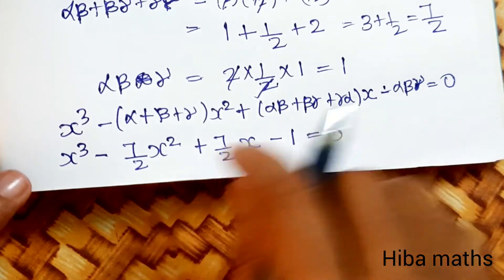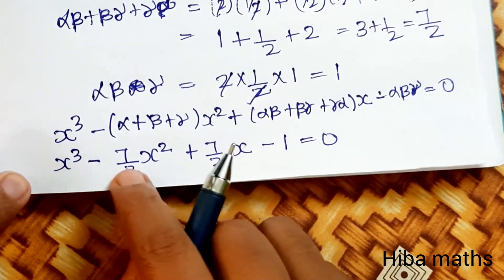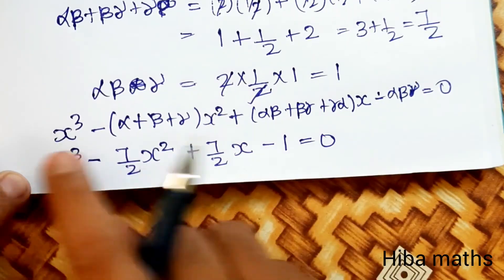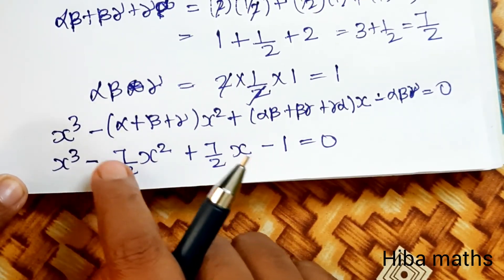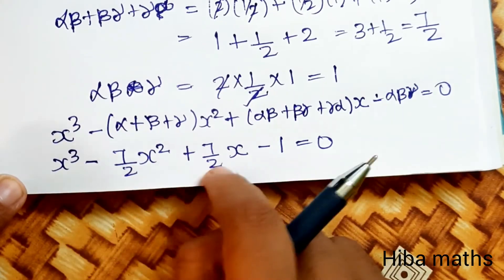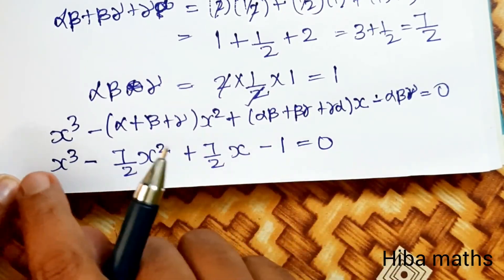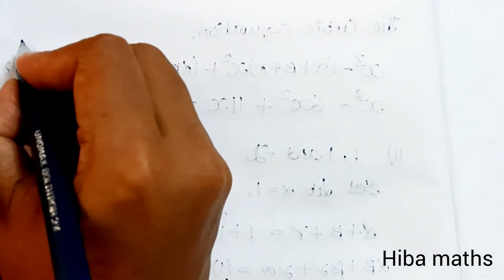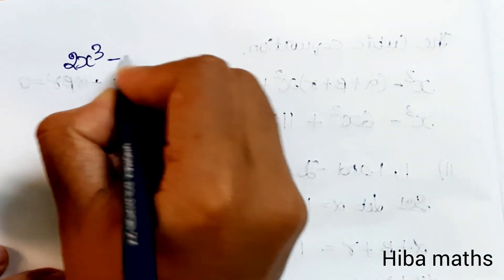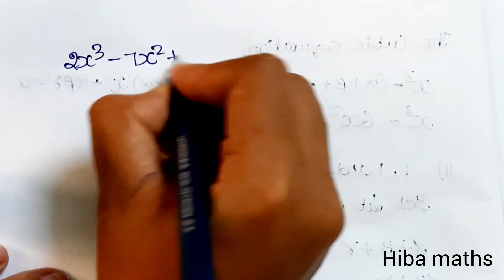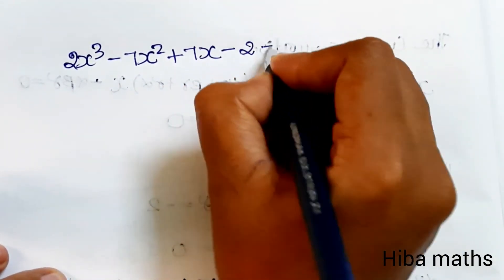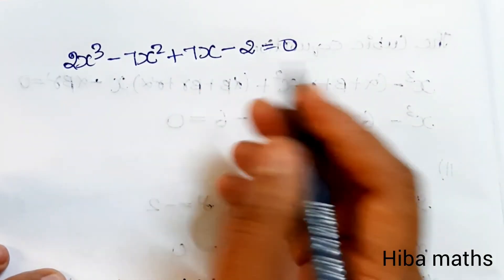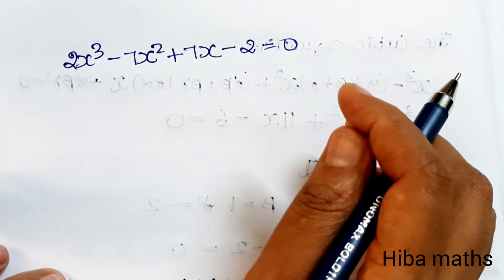Since the denominator is 2, we multiply throughout by 2 to clear fractions. This gives 2x³ minus 7x² plus 7x minus 2 equal to 0. This is our final answer.